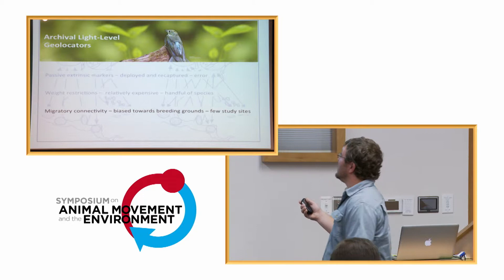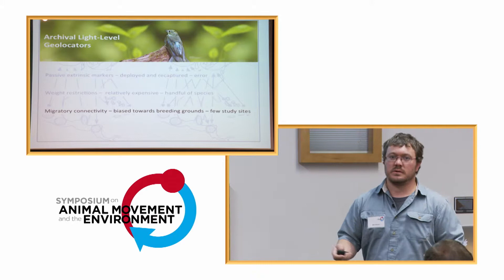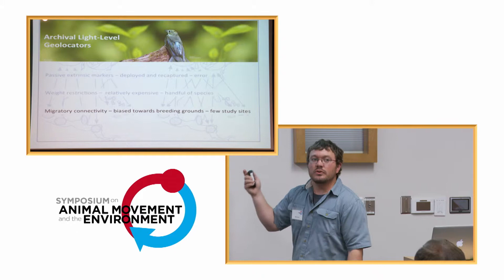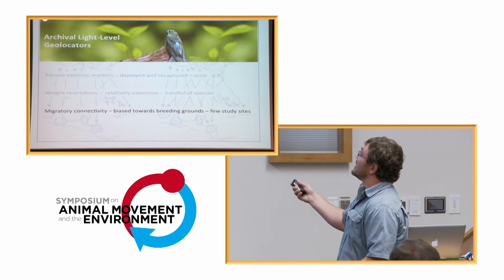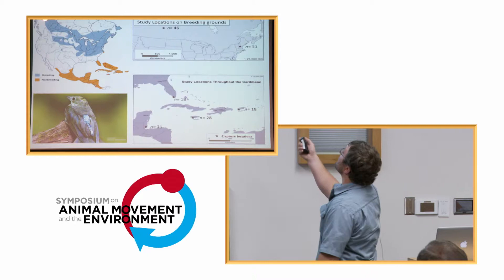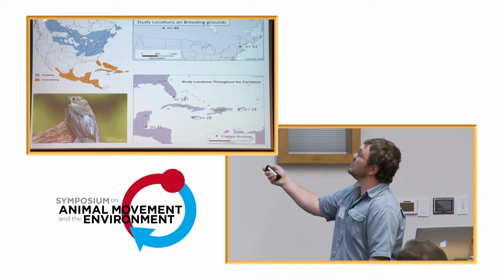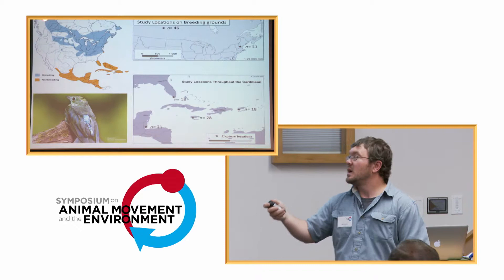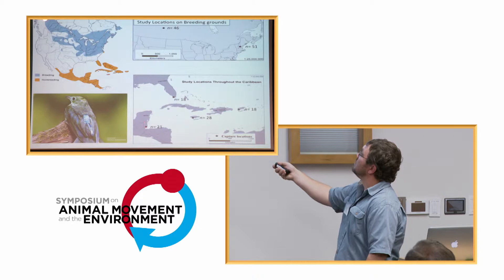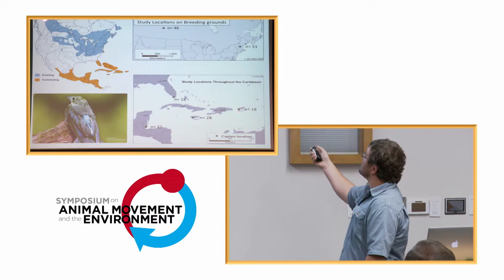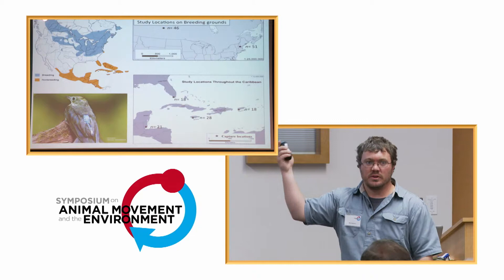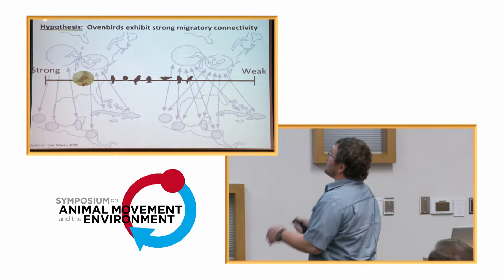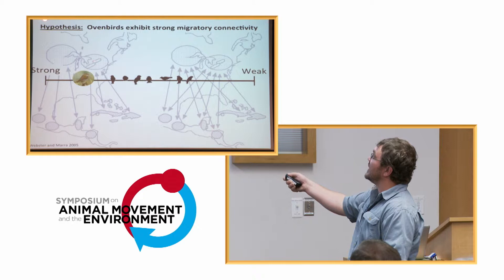Our understanding of migratory connectivity for small birds has improved dramatically because of geolocators, unfortunately most studies are biased towards the breeding season. What I did was put geolocators out at six locations — two widely separated places. Here's the oven bird breeding distribution in blue and non-breeding in orange. We put geolocators out in Canada and at Hubbard Brook in New Hampshire, and in winter at four locations: Belize, Everglades National Park, Jamaica, and Guanica dry forest in Puerto Rico. Then I had to go back the next year to recapture these birds.